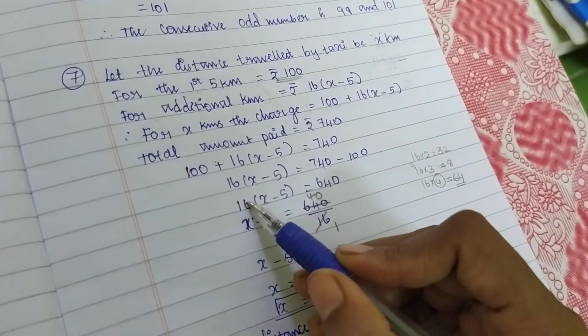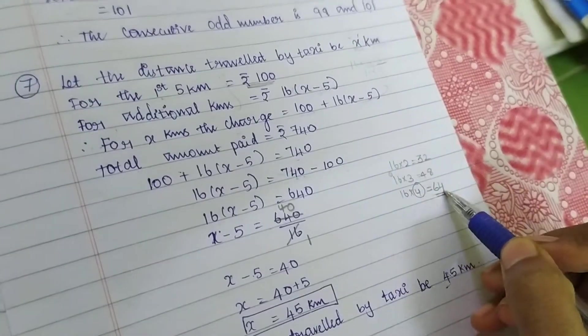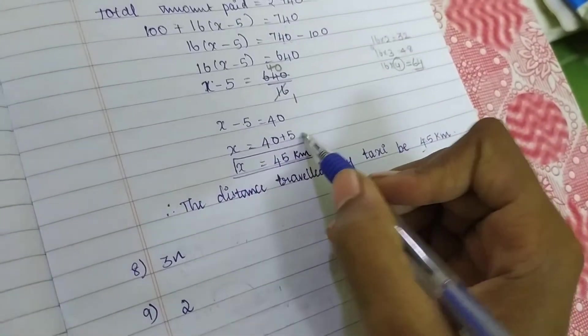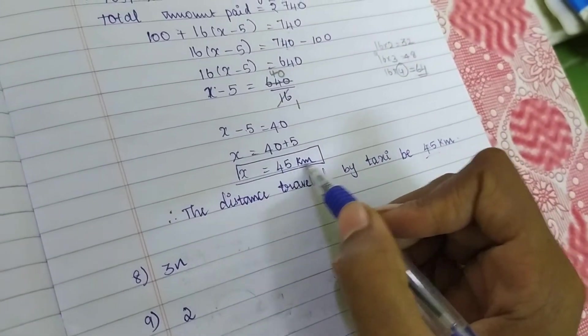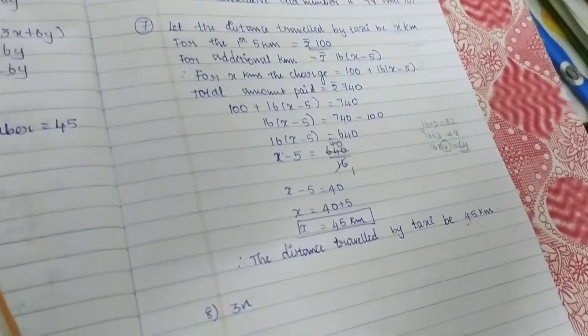This 16 moving this place, multiplication, right? This is moving this place, division. So in 16 table it is 64, so 4 times. I am having one more zero, so this is zero. So X minus 5 equals 40. This 5 is moving that place, plus 5. So X equals 45 kilometers. You have traveled to pay 740 rupees.